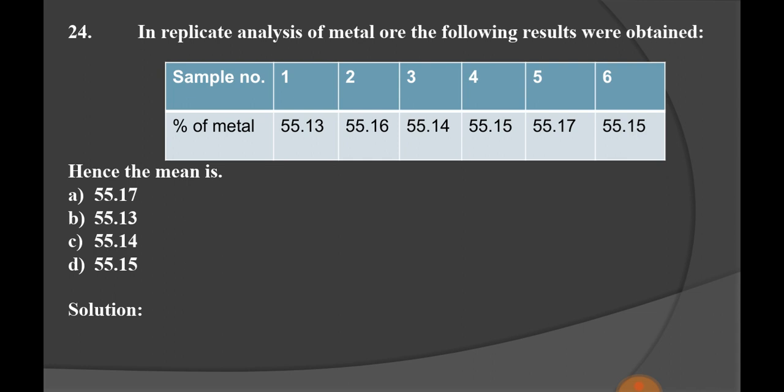In replicate analysis of metal ore the following results were obtained. For sample number 1 to 6, percentage of metal obtained is given in table. Hence, we have to calculate the mean. Options: A 55.17, B 55.13, C 55.14, and D 55.15. Mean is calculated by sum of all these results obtained divided by number of results. Option D, 55.15, is the right option. This is the mean of all the measurements.